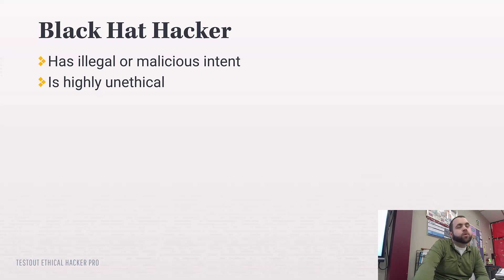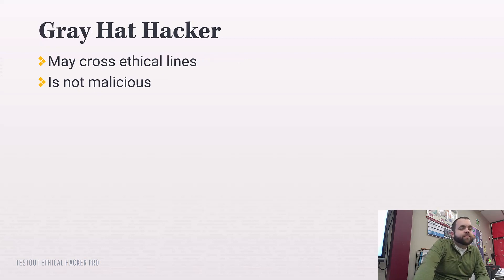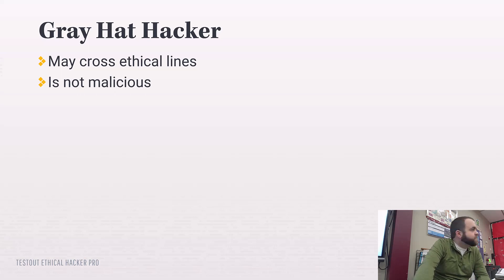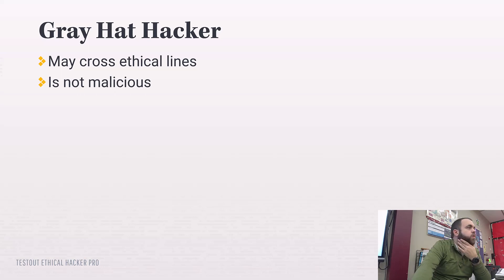Gray hat hackers like challenges. They see a barrier like a Wi-Fi password and hack it just for the sake of hacking it — they don't like having those barriers, so they want to break them to prove and hone their talents. They don't tend to be malicious in their intent, but they can cause harm. Breaking into a building or jumping a fence still causes issues for that organization even without malicious intent.